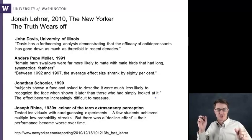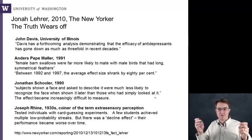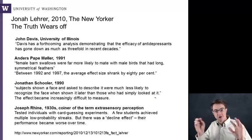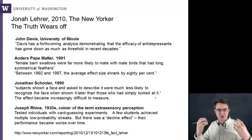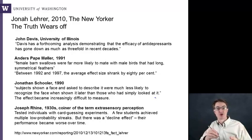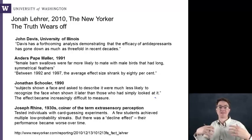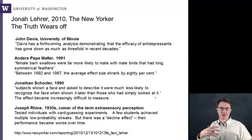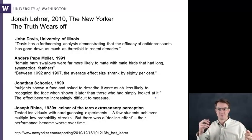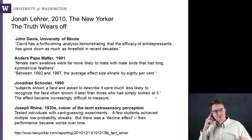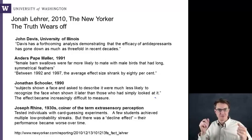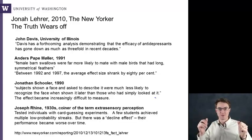A lot of the article talks about Jonathan Schooler, who in 1990 made a discovery of an effect he called verbal overshadowing. It was counterintuitive because it showed that people asked to describe a face they had seen using English were actually less likely to remember it than those who had just seen the face — talking about the face somehow overshadowed the effect of seeing it alone. Once again, this effect seemed to get weaker over time and became increasingly difficult to replicate, including by Jonathan Schooler himself, which he found frustrating.